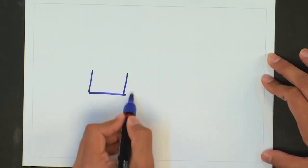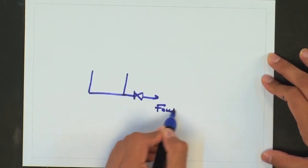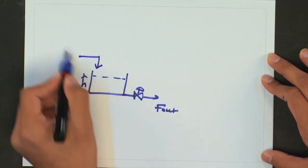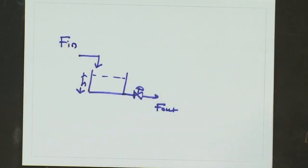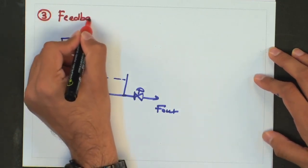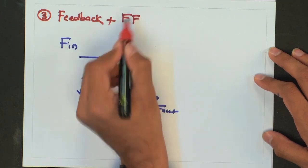Now, again try to think: is there any other way I can control or maintain height inside this tank? The third strategy can be a combination of the two, which is known as a feedback plus feed forward strategy.